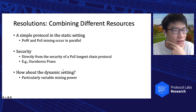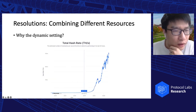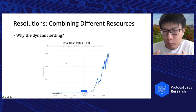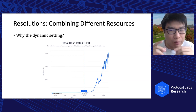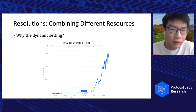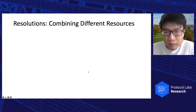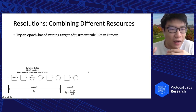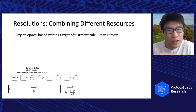But how about the dynamic setting? We are particularly interested in the variable mining power case. A key requirement of practical PoW blockchains is to adapt to the immense variation in mining power. For example, the mining power of Bitcoin increased exponentially by an astonishing factor of 10^14 during its decade of deployment. Therefore, we have to consider the dynamic setting for our protocol to be practical.